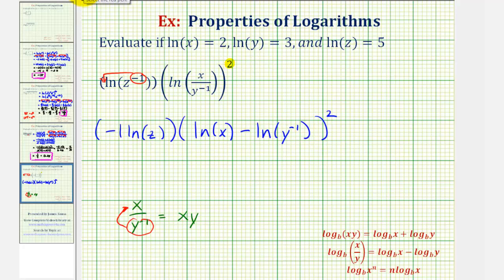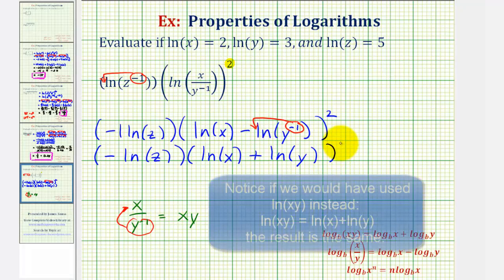And after the last step, we can apply the power property of logarithms here, where we can move the exponent of negative one to the front. Notice how if we did that, we'd have minus negative one natural log y. But subtracting a negative is the same as adding a positive. So we have negative natural log z, and then we have natural log x plus natural log y, and all this is still squared.